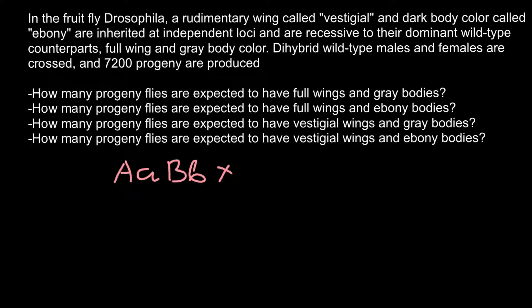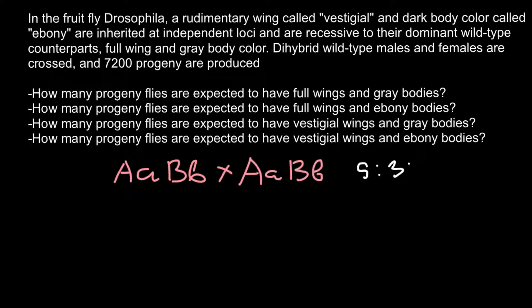We cross with another parent that is also hybrid for gene A and gene B. This is what we call a dihybrid cross — when both genes are heterozygous and we cross with another parent that is also heterozygous for both genes. In a classical dihybrid cross we should get the following ratio: 9 to 3 to 3 to 1.